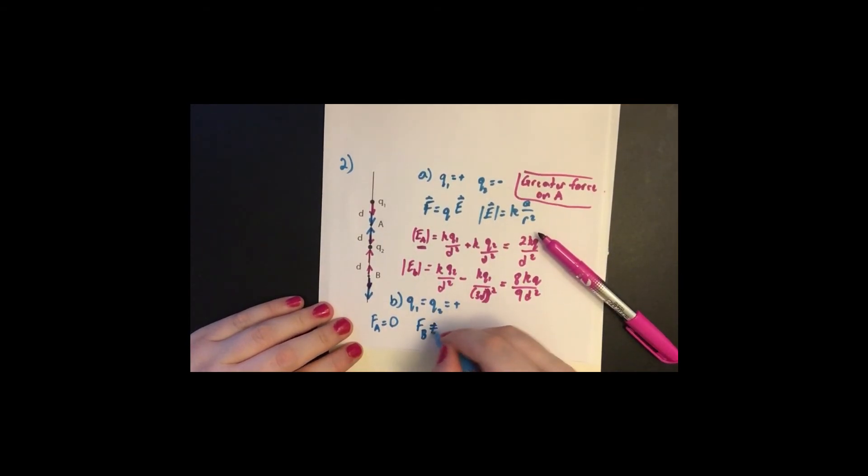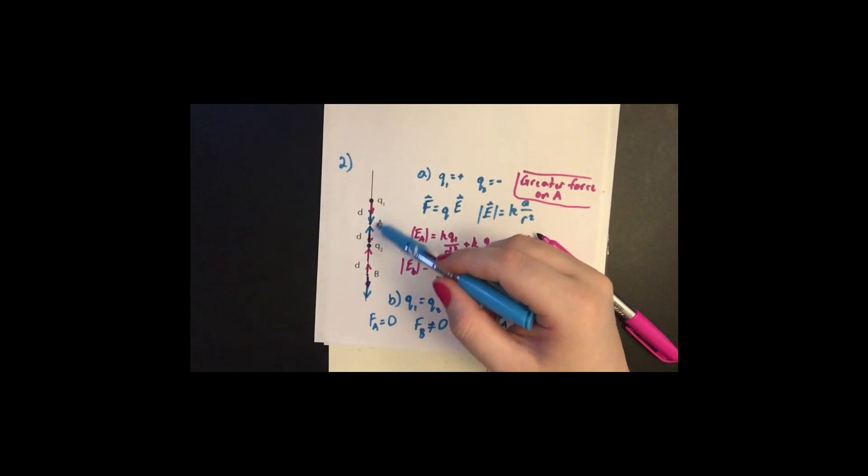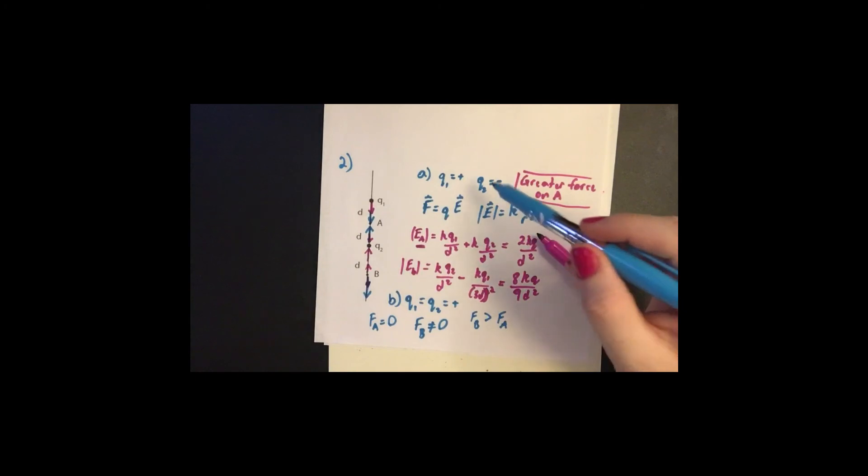So our answer does change, and the force at B is now greater than the force at A, because the force at A is now zero, because the two fields cancel, because the fields are going in opposite directions, instead of the same direction which they were doing in part A.